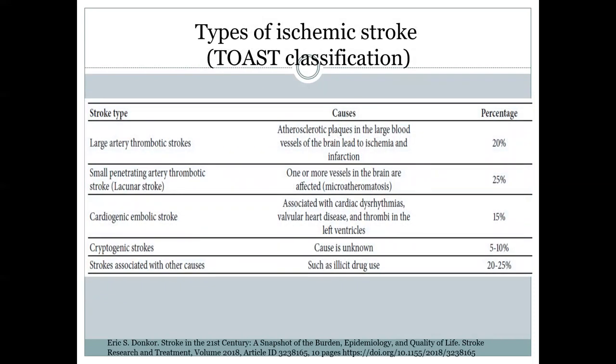There are a few types of ischemic stroke according to the TOAST classification. The most common are large artery thrombotic strokes, comprising about 20% of all strokes, caused by atherosclerosis in large blood vessels of the brain leading to ischemia and infarction. Another very common type is small penetrating artery thrombotic stroke, such as lacunar stroke, where one or more vessels in the brain are affected by micro-atheromatosis. The last common type is stroke associated with all other causes, such as illicit drug use or drug overdose.